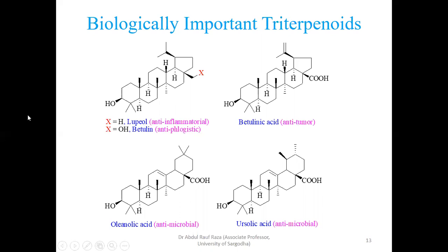These are different varieties of biological activity — it is not limited to these few examples. Literature is full of triterpenoids and their biological importance. I have just taken a few examples. Now I shall switch over to the last type — tetraterpenoids.